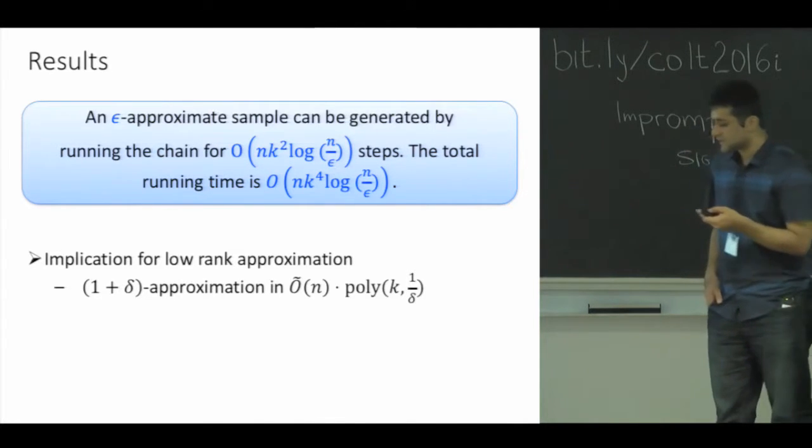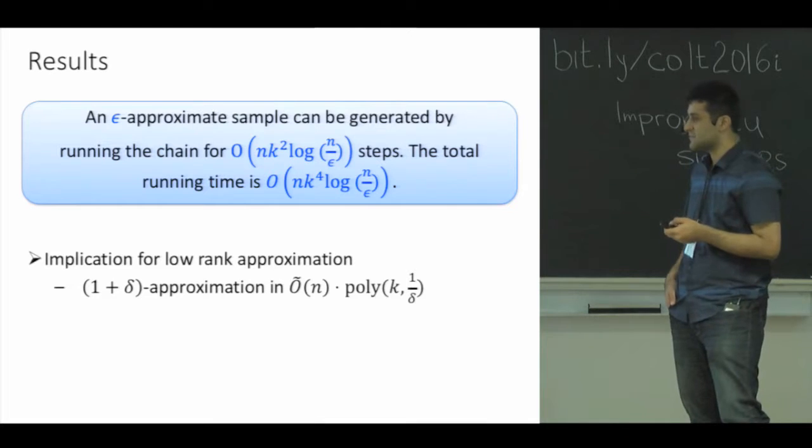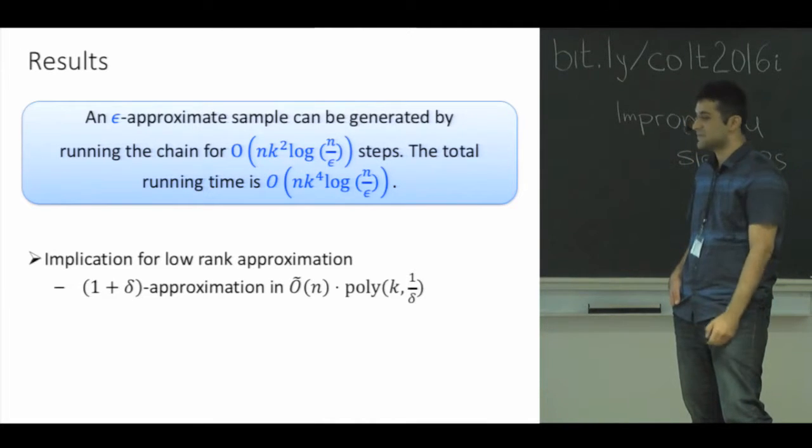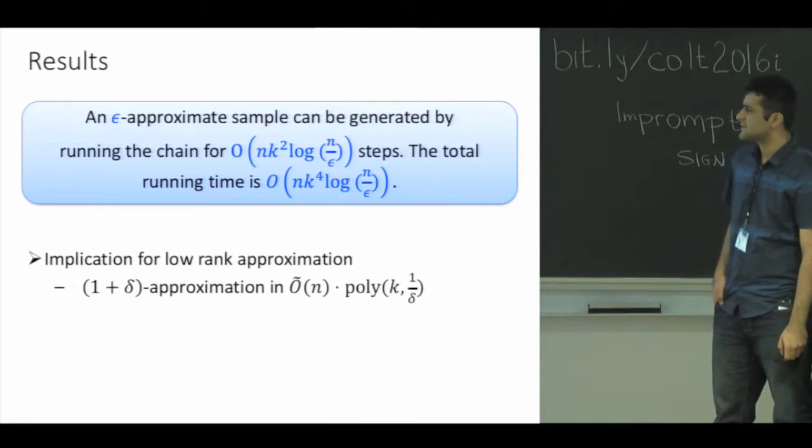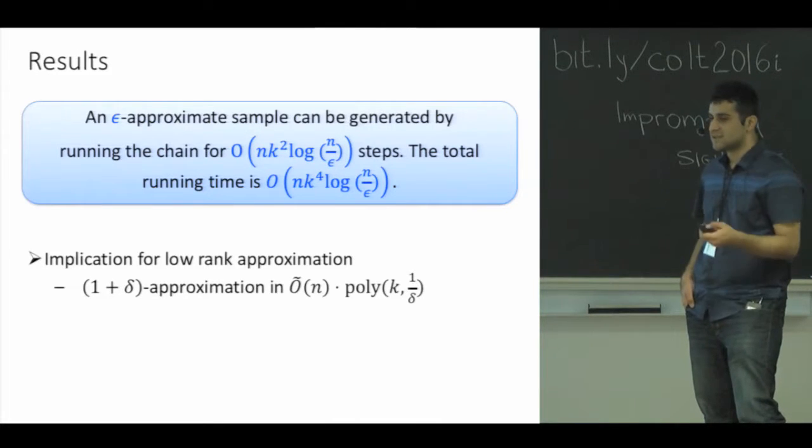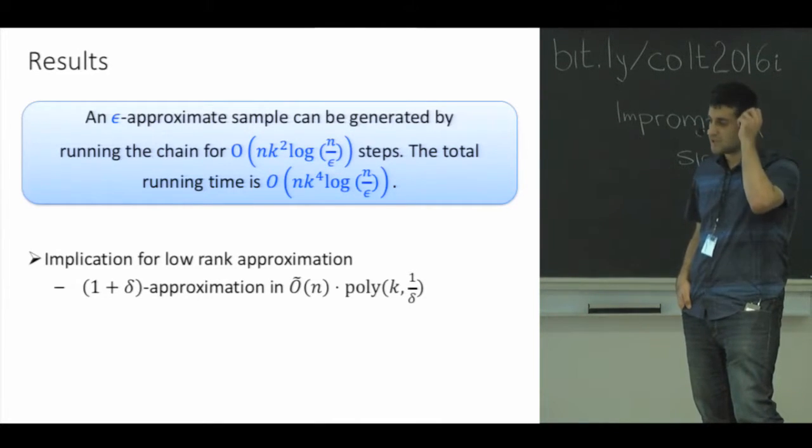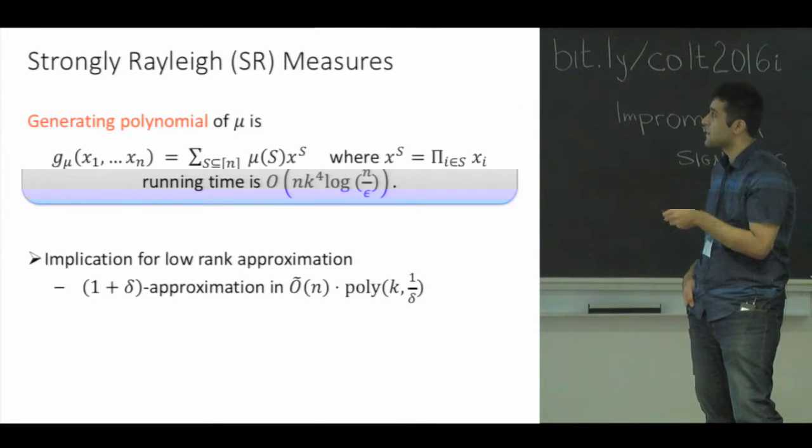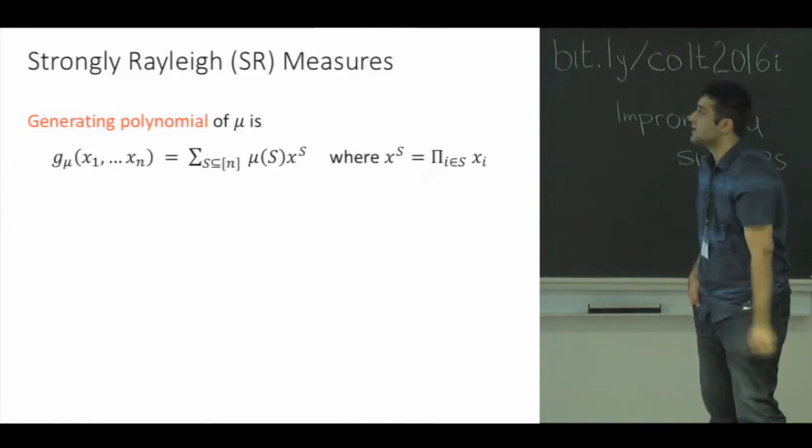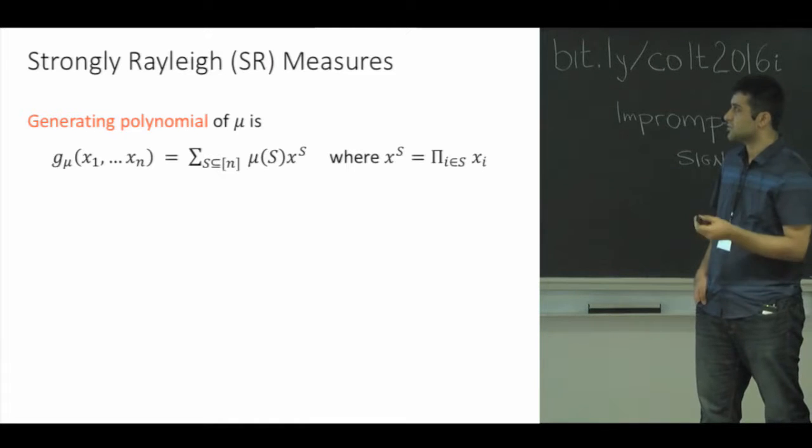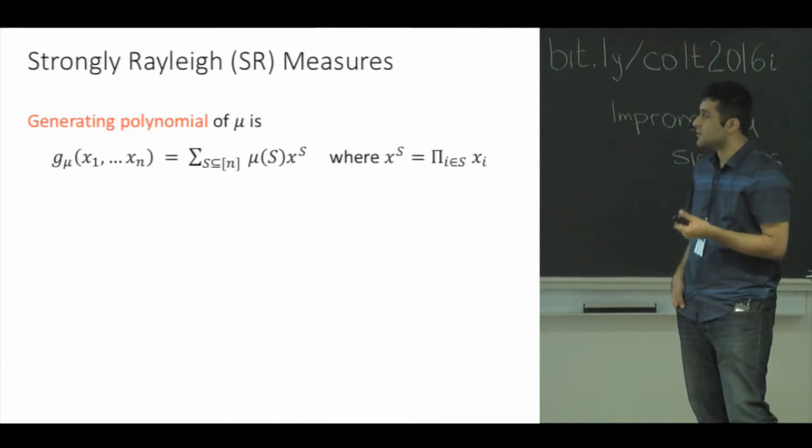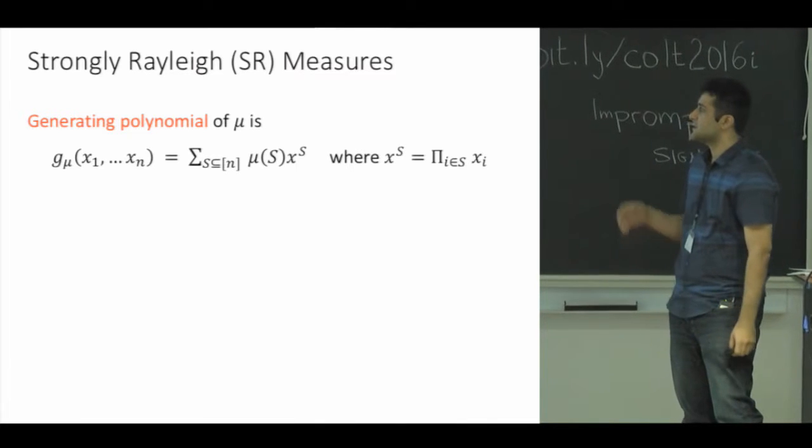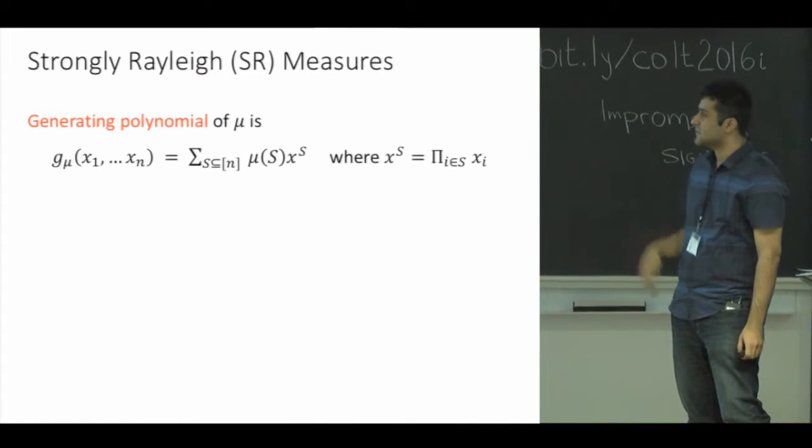In order to prove these results, we view k-DPPs as a member of a more general family of distributions called strongly Rayleigh distributions. The reason is that they have been deeply studied and they have some nice properties that we can use to analyze the chain. Let me first define strongly Rayleigh distributions, or in short, SR measures. Given a point process, the generating polynomial of a process is a multilinear polynomial in n variables.